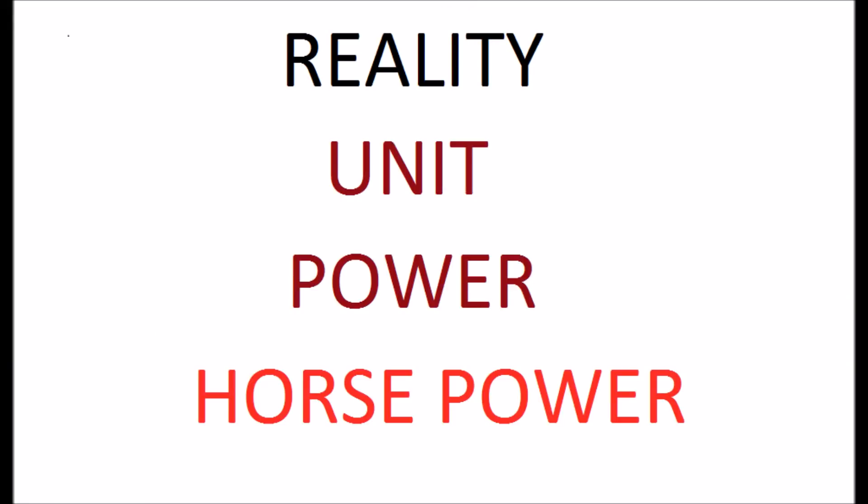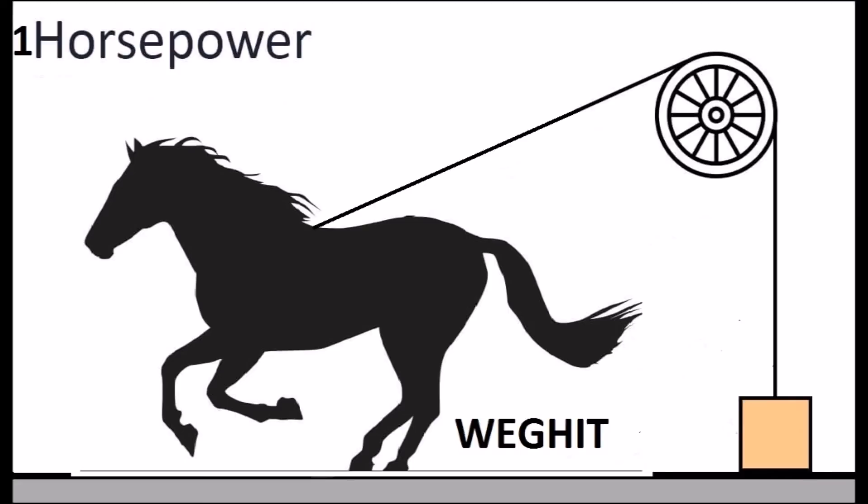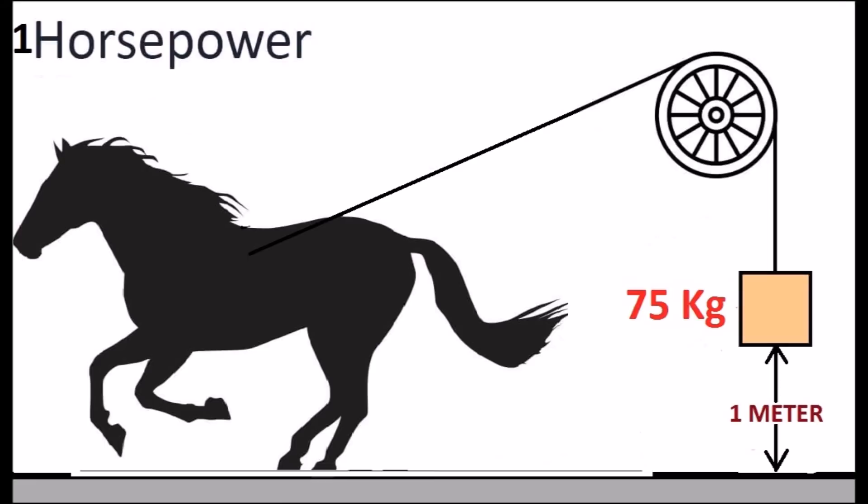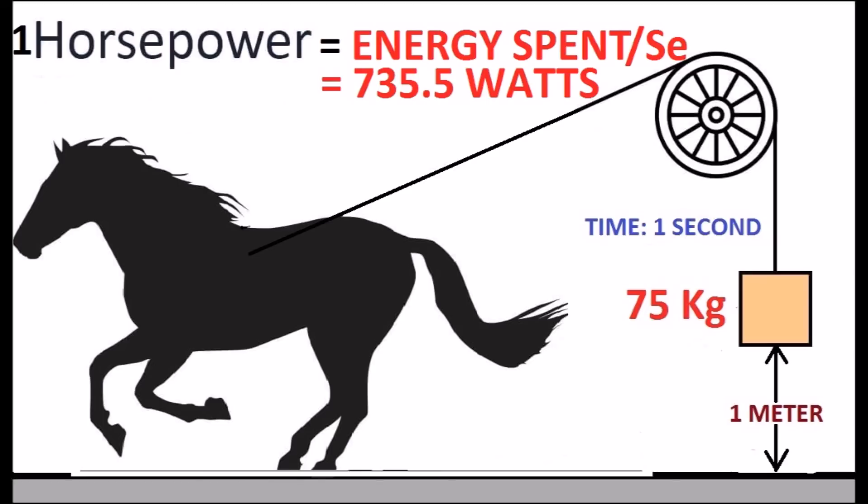In reality, another unit for power is horsepower. One horsepower means lifting 75 kilograms from ground level to one meter above within one second. The energy spent doing this equals one horsepower, which equals 735.5 watts.